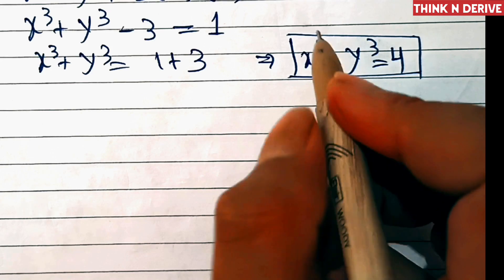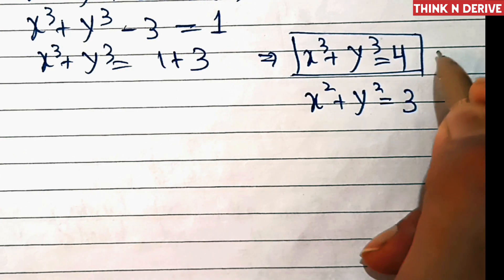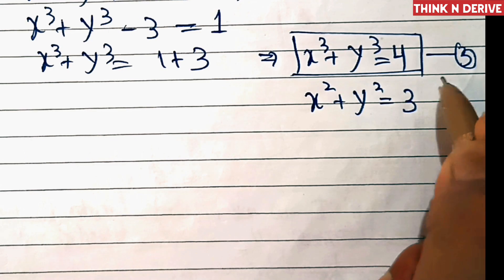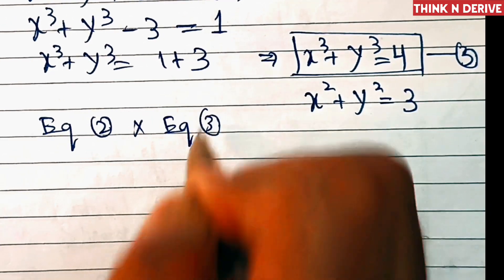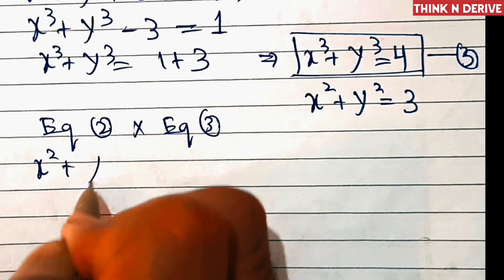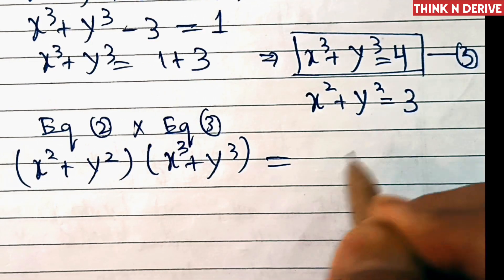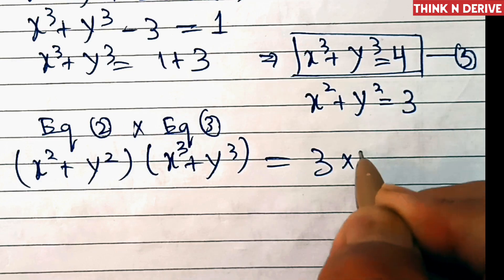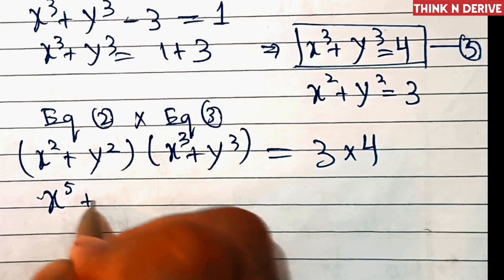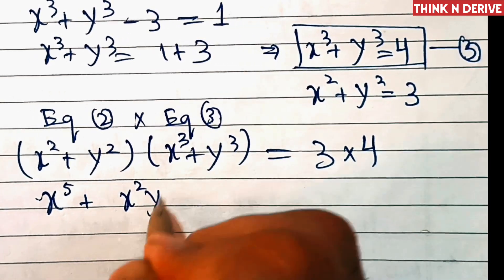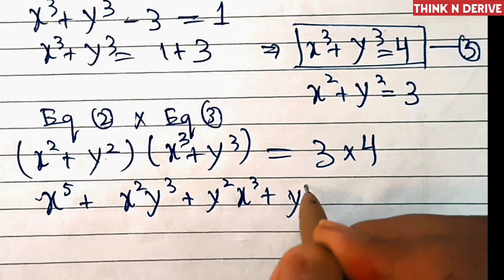From equation 2 we have x squared plus y squared equal to 3, and we just found x cubed plus y cubed equal to 4. We multiply these two expressions: x squared plus y squared times x cubed plus y cubed equals 3 times 4 equals 12. Expanding gives x power 5 plus x squared y cubed plus y squared x cubed plus y power 5 equals 12.